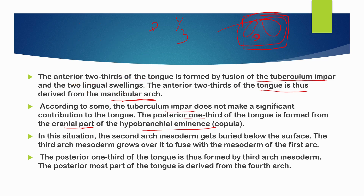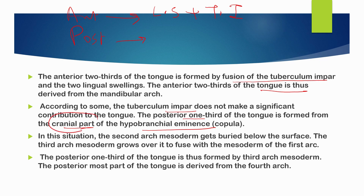To summarize: the tongue comprises two parts — the anterior part and the posterior part. The anterior part is formed by the fusion of the lingual swellings plus the tubercular impar, whereas the posterior part is formed from the cranial part of the hypobranchial eminence.